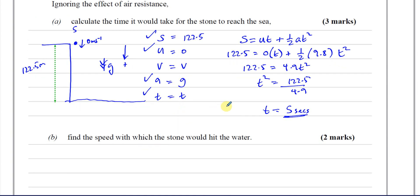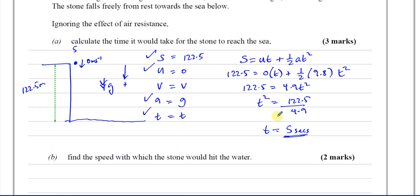Part B says: find the speed with which the stone would hit the water. We have SUVAT and now we know T is 5 seconds. We could use another formula involving T, or we could use V² = U² + 2AS without needing T.